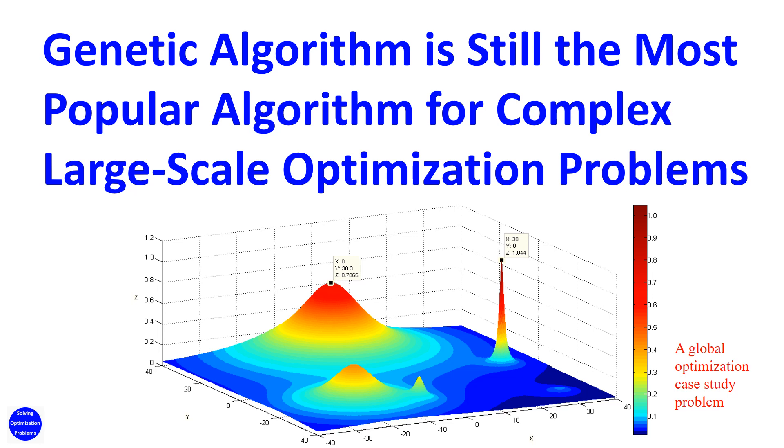Now, with those data from Web of Science database, we can make a conclusion that genetic algorithm is still the most popular algorithm for complex large-scale optimization problems. Do you agree? Leave your comments below for discussion.